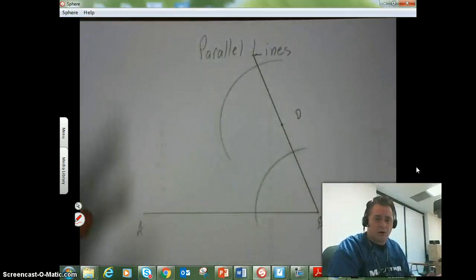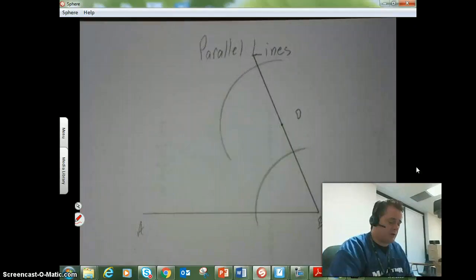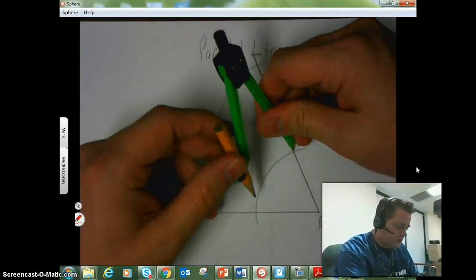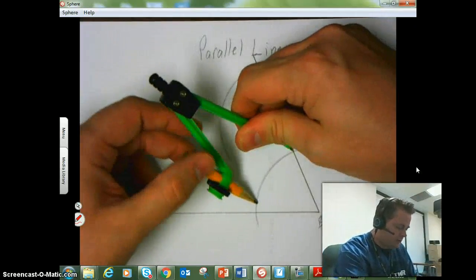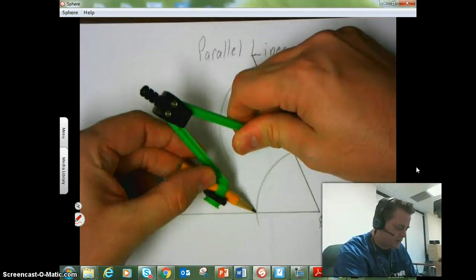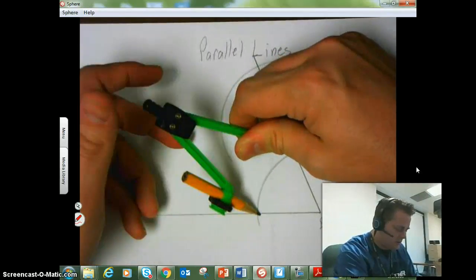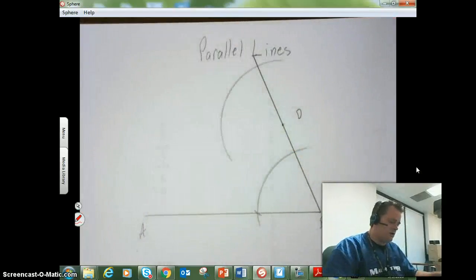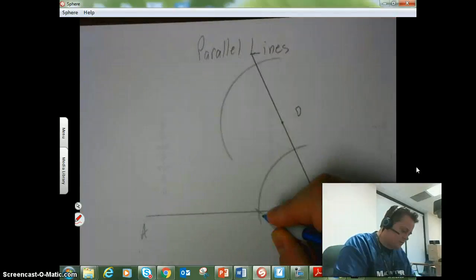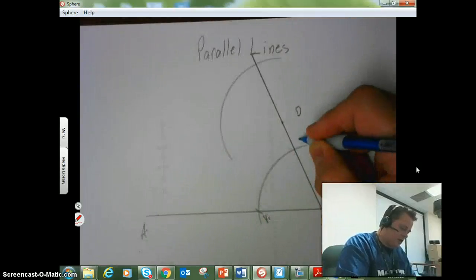Now here's the second part of copying an angle. What I'm going to do is open up the compass to be the width, whatever the distance between... and I'm off a little bit there. That looks better.